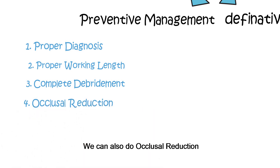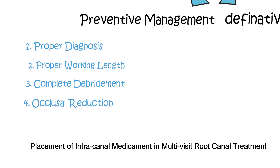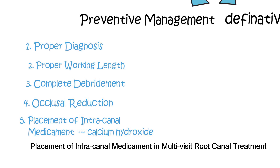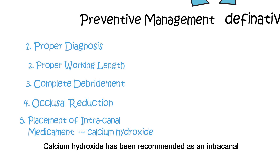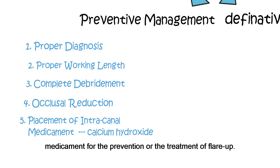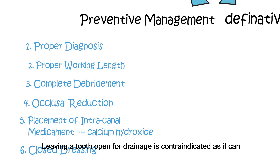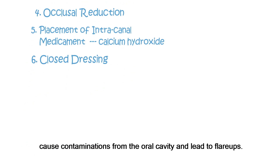We can also do occlusal reduction, which is a good pain preventive strategy. Placement of intracanal medicaments in multi-visit root canal treatment is also important. Calcium hydroxide has been recommended as an intracanal medicament for the prevention or treatment of flare-ups. Next is closed dressing — leaving a tooth open for drainage is contraindicated as it can cause contamination from the oral cavity and lead to flare-ups.